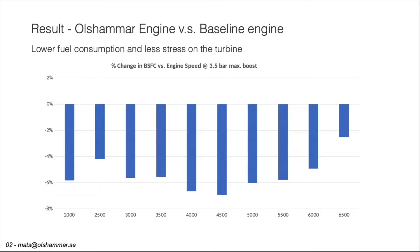The results when the Olsammar engine is compared to the baseline engine is that we get lower fuel consumption and there is less stress on the turbine in the turbo. For example, at absolute boost pressure 3.5 bar we get 7% lower fuel consumption at 4,500 RPM.